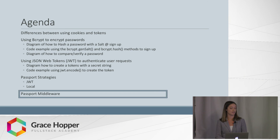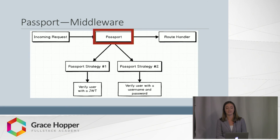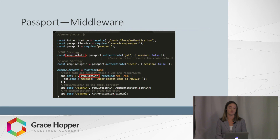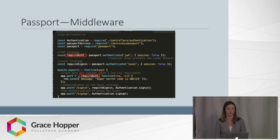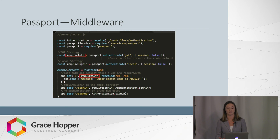Now we'll wrap up by examining how these strategies employ the passport middleware. Passport directs the incoming requests towards one of the authentication strategies at hand. The passport library has an authentication method that takes the name of the strategy. The file in which the strategies have been defined is imported at the top. Once the authentication method receives the strategy name, it sets the session to false in order to prevent the default of setting up a cookie-based session.